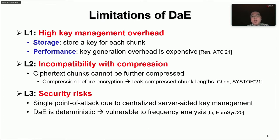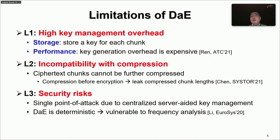Second, DAE is incompatible with compression as the cloud can only view the ciphertext chunks, which tend to have high-entropy content and cannot be further compressed. Although the client can perform compression locally before encryption, this would leak the compressed chunk length and introduce extra information leakage. Third, DAE has a security risk. State-of-the-art DAE approaches deploy a key server for key generation, making it a single point of attack. Also, DAE is deterministic by nature, realizing a one-to-one mapping between plaintext and ciphertext chunks, allowing an adversary to launch frequency analysis to infer original plaintext chunks from the frequency distribution of ciphertext chunks.